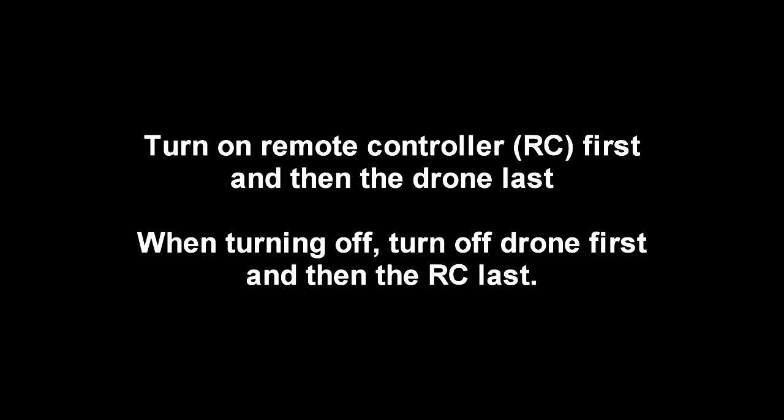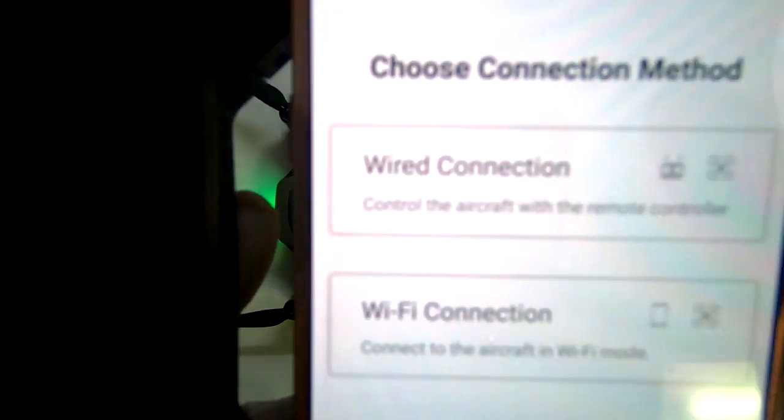Then you can connect your smartphone to the remote control and then access the DJI GO 4 app. Once it's connected, click on enter the device and then connect to the aircraft and choose wired connection if you're using the remote control.